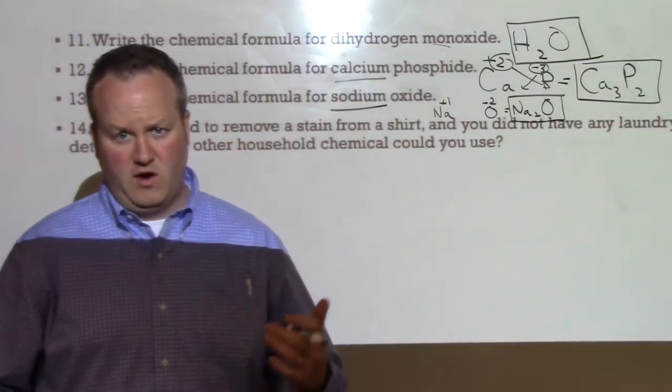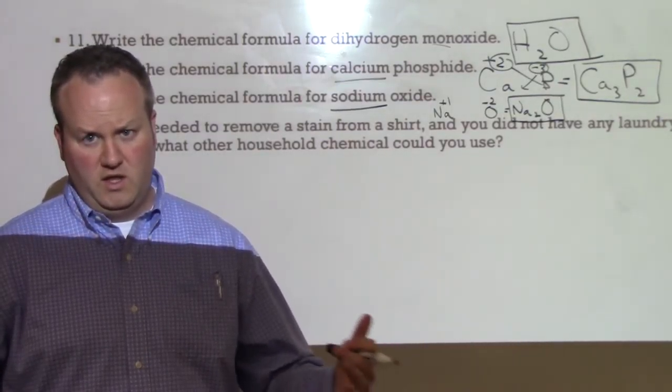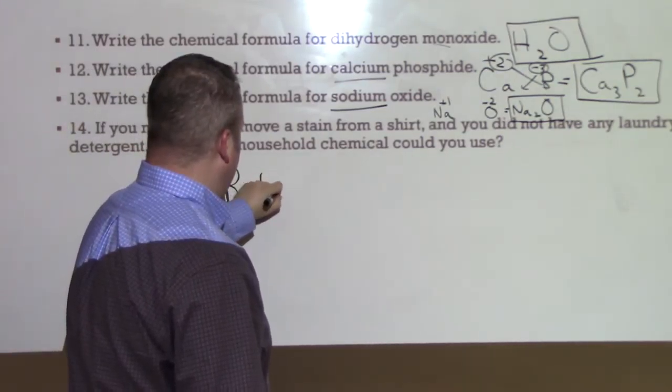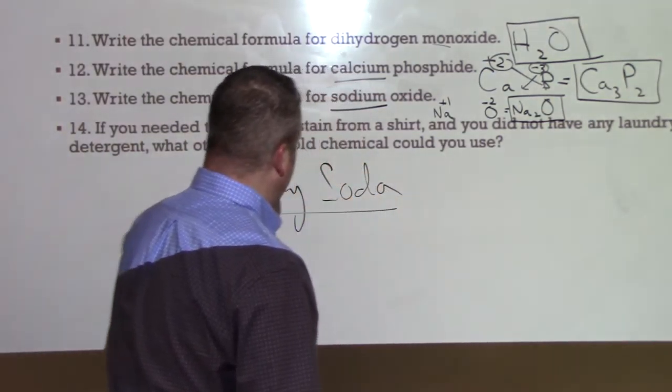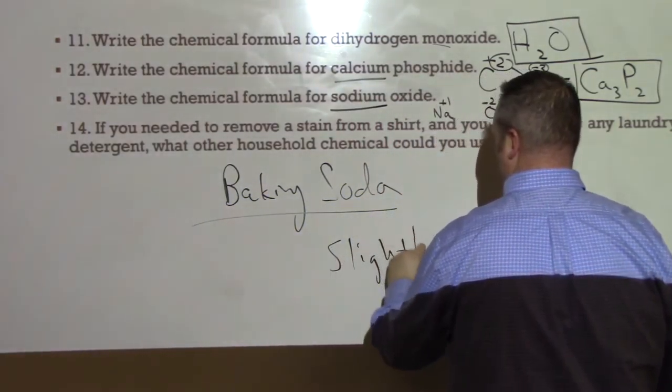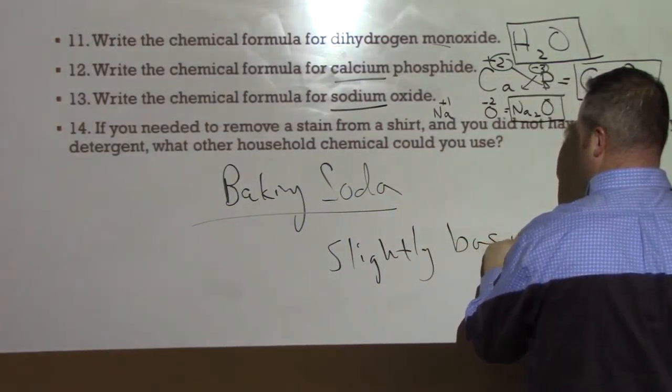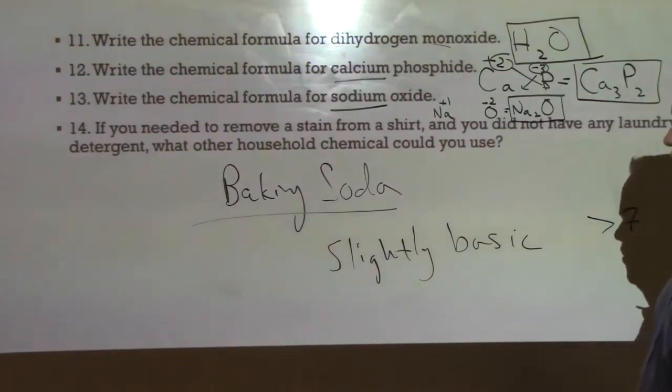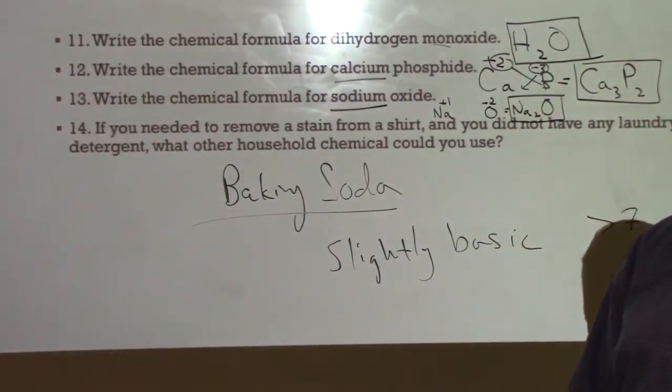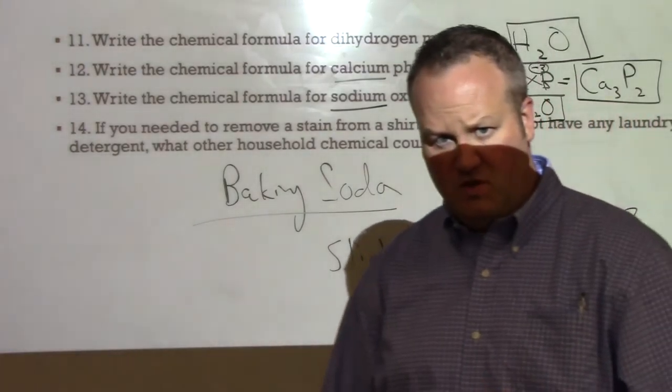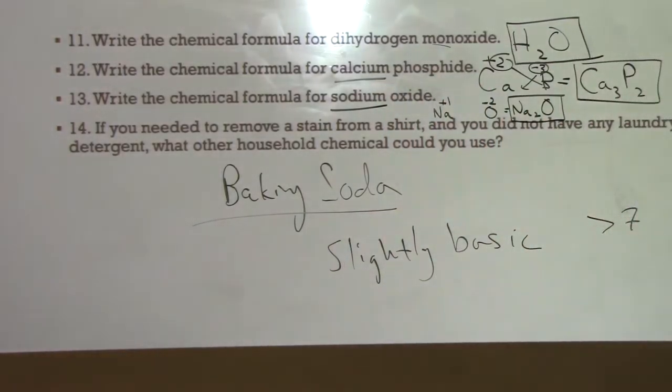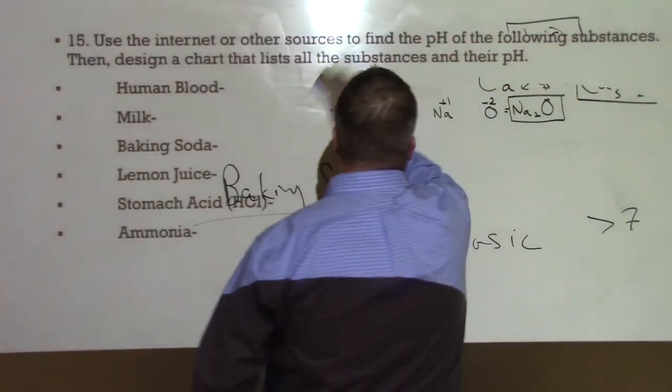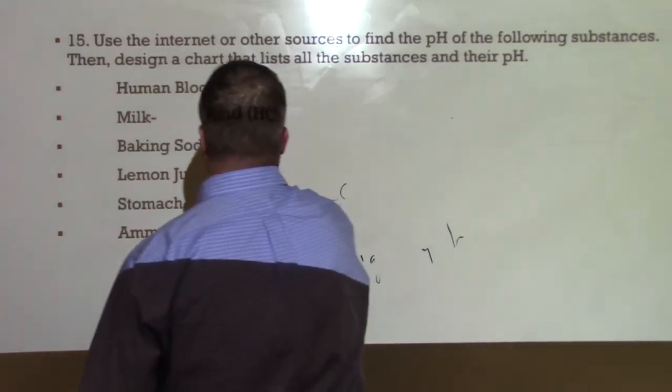Number 14, if you needed to remove a stain from a shirt and you didn't have any laundry detergent, what other household chemical could you use? Well, remember that soaps are bases. So you want to choose something else that you might have in your house as a base. You could choose window cleaner. Window cleaner is a base. But the more appropriate thing to use would probably be baking soda. And I say that because baking soda is slightly basic. So its pH is slightly above 7, which means it would make a better detergent for washing your clothes than something like lemon juice or vinegar, which are acids.